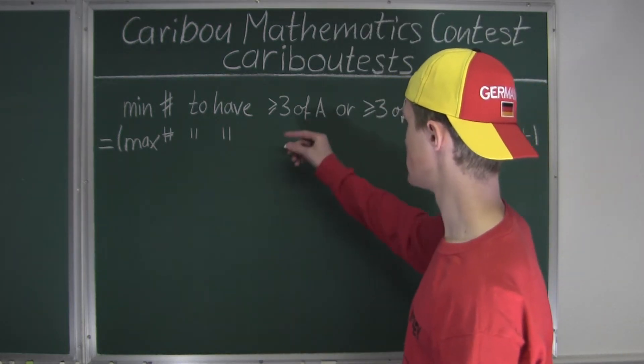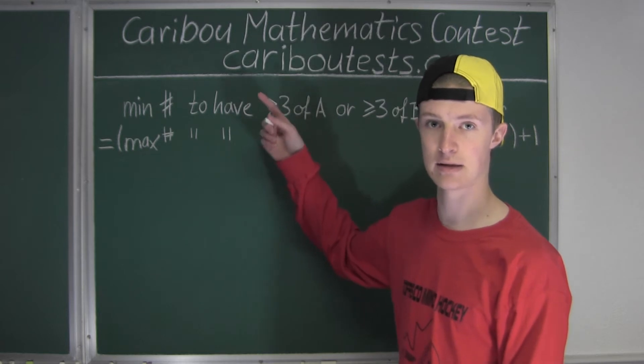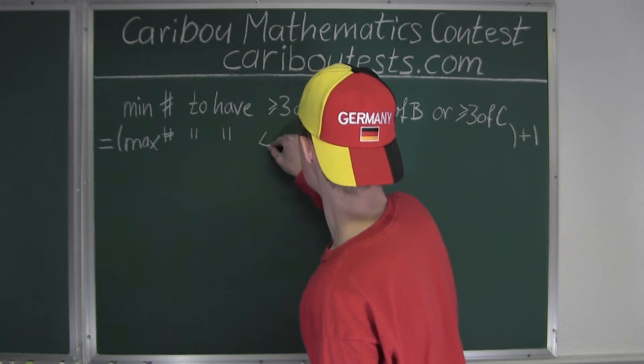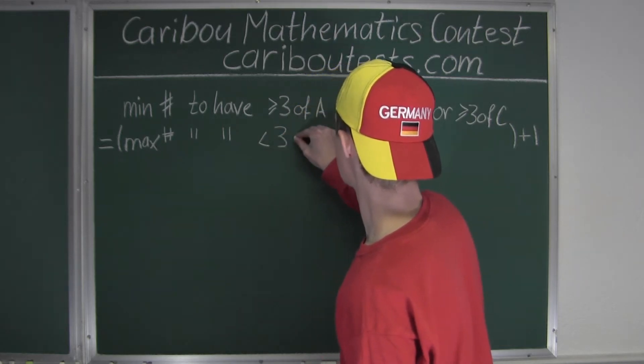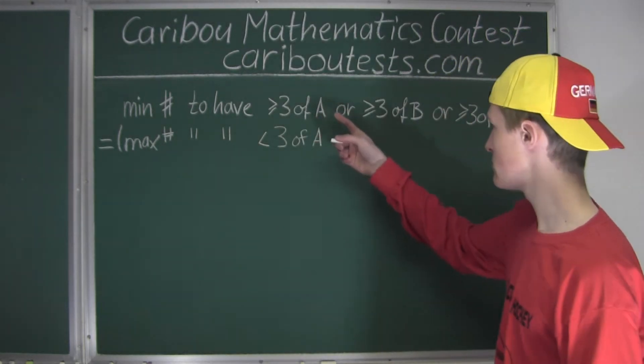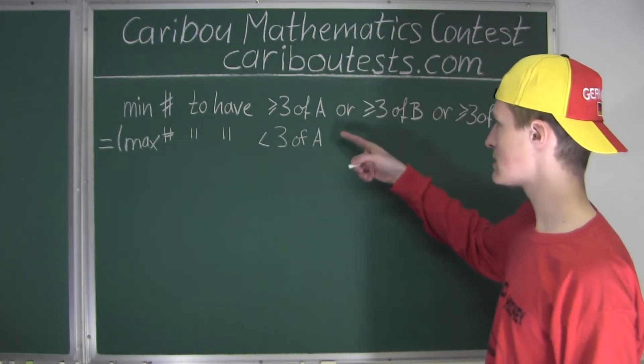So instead of three or more, we will have less than three candies of each type. So we have less than three of A. And also, for every time we see an OR, we replace that with an AND to make it opposite.